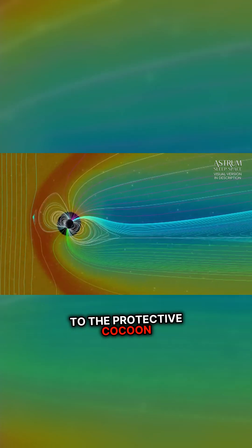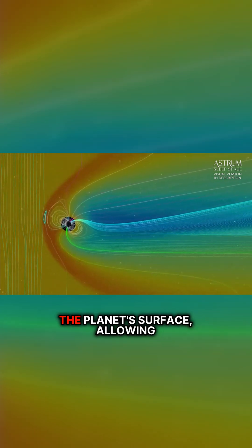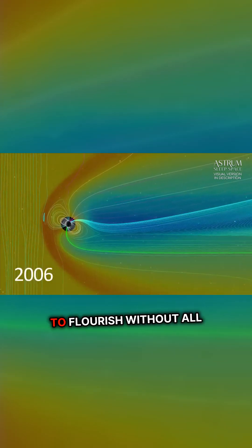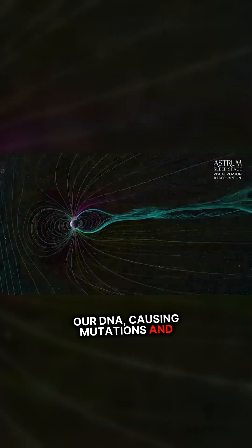Thanks to the protective cocoon of this field, deadly solar radiation is deflected away from the planet's surface, allowing things to flourish without all that radiation breaking down our DNA, causing mutations and cancers.